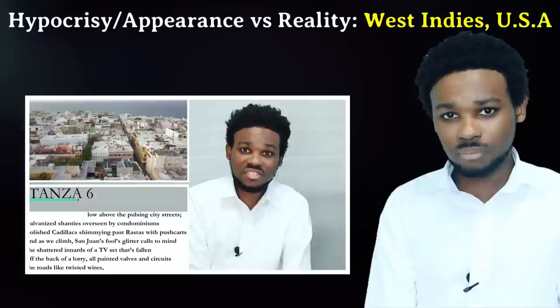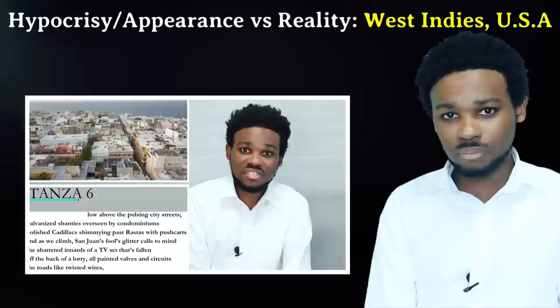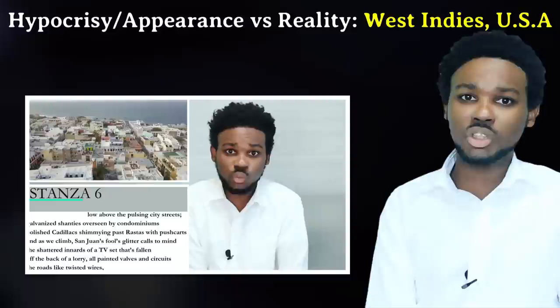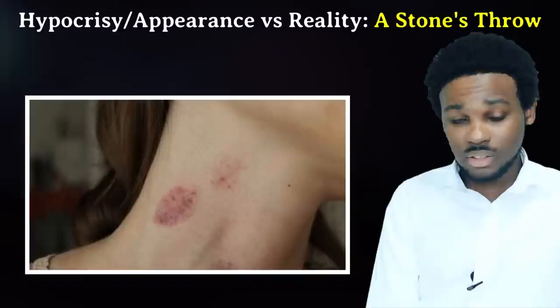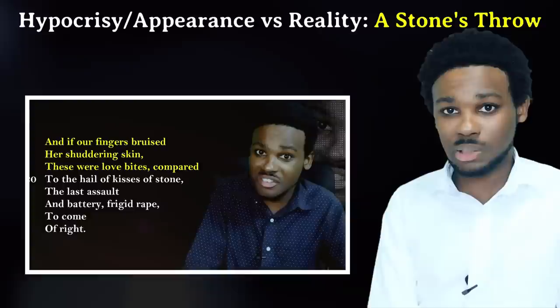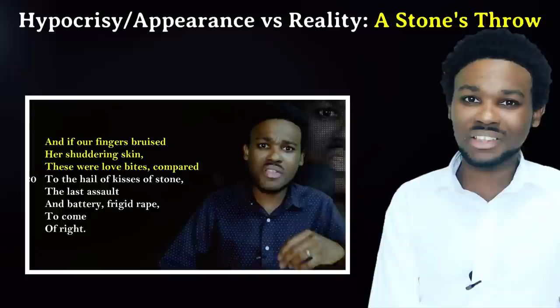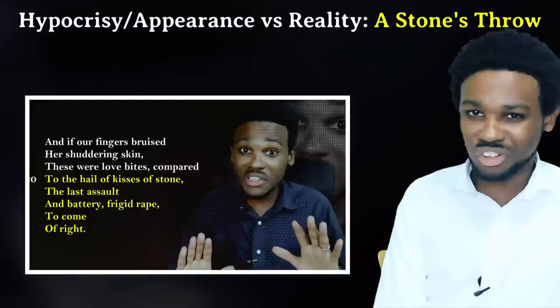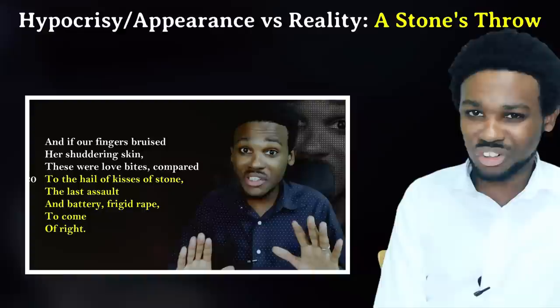Finally: Hypocrisy and Appearance vs Reality. The poems are West Indies USA, A Stone's Throw, Dulce et Decorum Est, Ol' Haig, Little Boy Crying, Once Upon a Time, Mirror, and Death Be Not Proud. In these poems, things are not as they appear to be. In West Indies USA, even though Puerto Rico looks like paradise and many Caribbean people dream of living there, the country has its own demons — not everyone there is living the good life. In A Stone's Throw, the men who are about to rape and kill this prostitute are hypocrites — some of them have probably slept with her, making them guilty of adultery, and isn't it hypocritical to kill someone for sinning when killing is also sinful? These men pretend to be holy, but really they're quite the opposite.